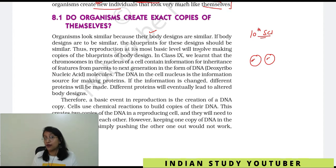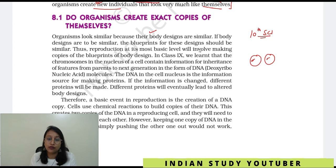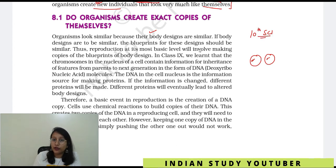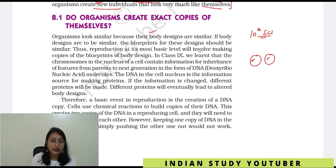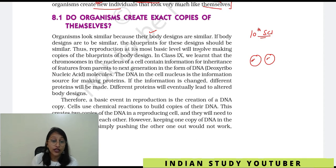Generally, we will learn the difference between sexual and asexual reproduction. But normally, it can be understood as copying when we talk about reproduction. In class 9, we learned that the chromosomes in the nucleus of a cell contain information for inheritance of features from parents to the next generation, in the form of DNA.